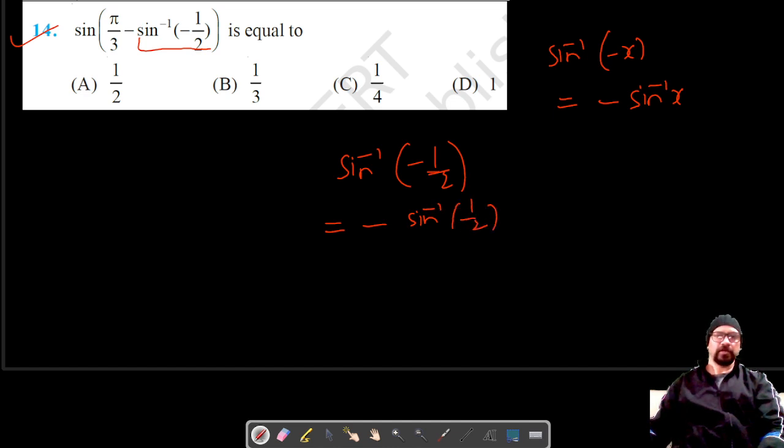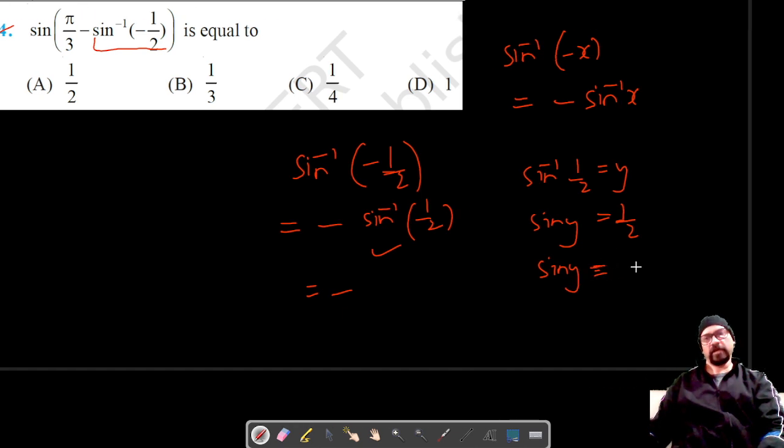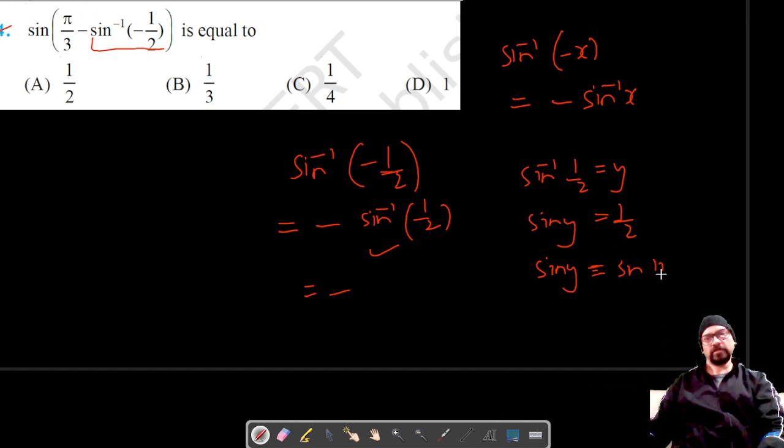Now let's say sine inverse half is equal to y, which gives us sine y is equal to half. Sine gives numerical value half for angle π by 6, so y is π by 6. That means sine inverse negative half is negative π by 6.